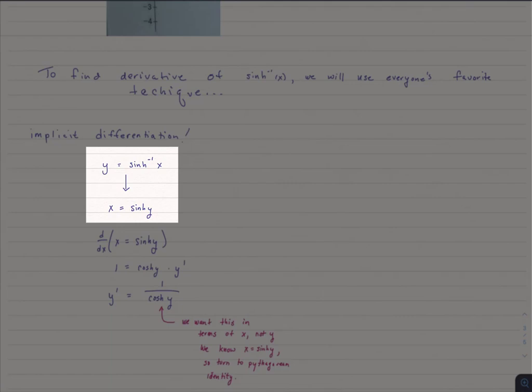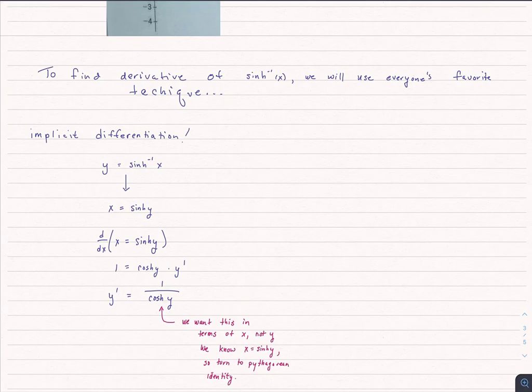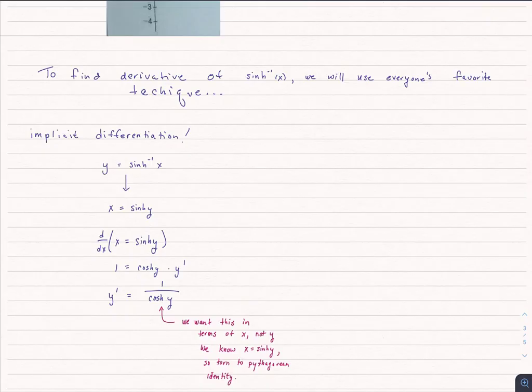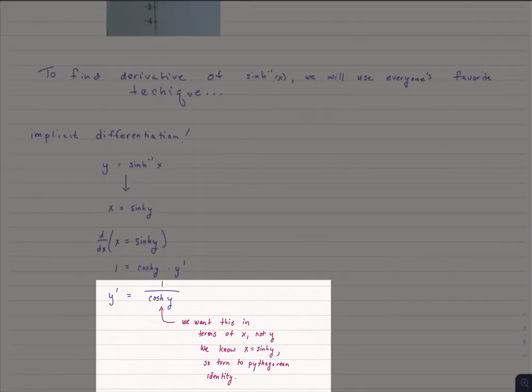So I'm going to rewrite that as x equals hyperbolic cosine of y, and I'm going to take the derivative of both sides. The derivative of the left-hand side is just 1. The right-hand side, again, I'll have to use the chain rule, and the derivative of hyperbolic sine is hyperbolic cosine. But then I have to do the chain rule, so it will have to be multiplied by the derivative of y. I'll solve for y prime. We're great, except we want this in terms of x. We don't want y prime to be given in terms of y.